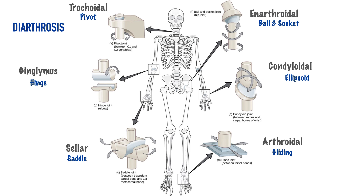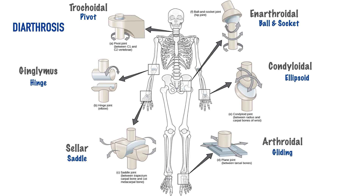The condyloidal joint, oftentimes referred to as an ellipsoid joint, permits movement in two planes of motion without rotation — described as flexion, extension, abduction, and adduction. And lastly, arthroidal joints, often referred to as gliding or plane joints, consist of two flat bone surfaces joined together, and the resulting motion is gliding movements that vary depending on the joint of interest.